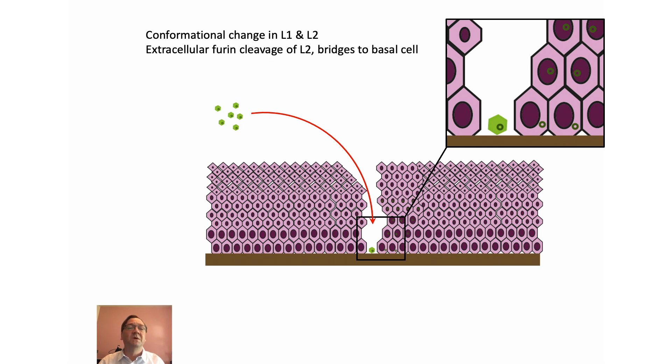Then you get extracellular furine cleavage of L2, which helps bridge L2 to the basal cells and internalize the HPV DNA into the basal cells, which then gets incorporated into the nucleus.